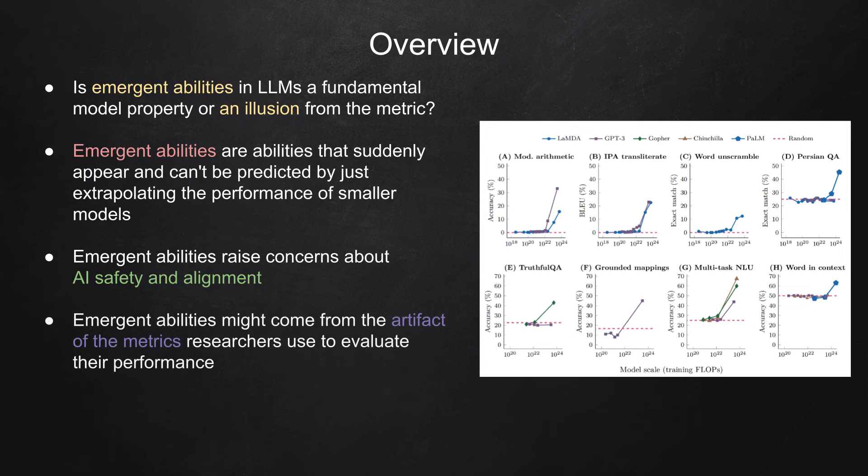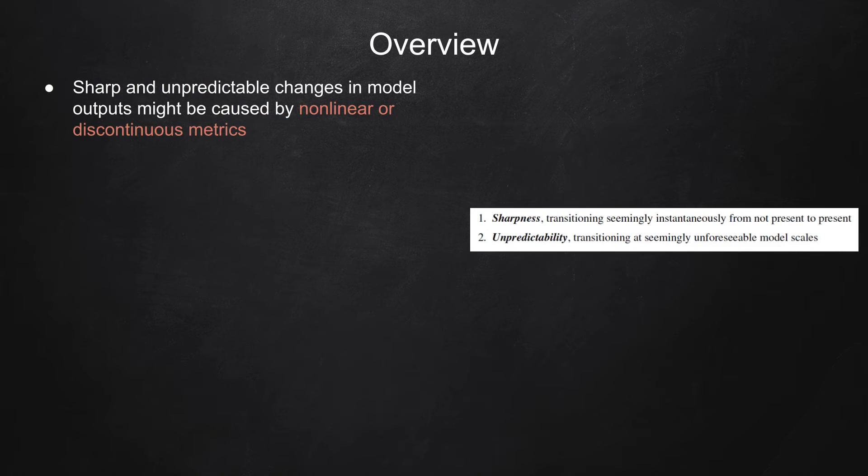However, this paper argues that emergent abilities might not be a true property of LLMs, but rather an artifact of the metrics researchers use to evaluate their performance. The authors propose an alternative explanation that these seemingly sharp and unpredictable changes in model outputs might be caused by non-linear or discontinuous metrics, which could lead to inaccurate performance measurements of smaller models.